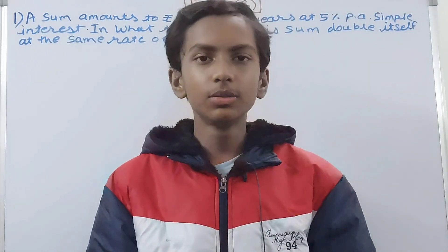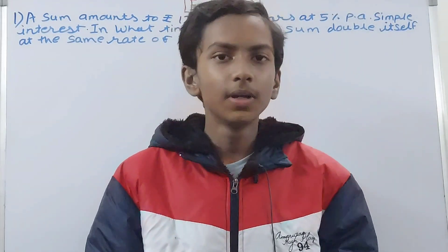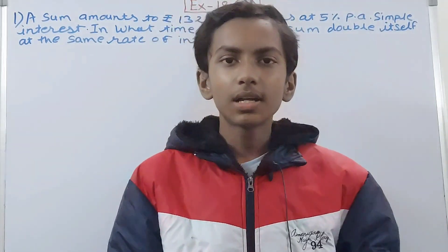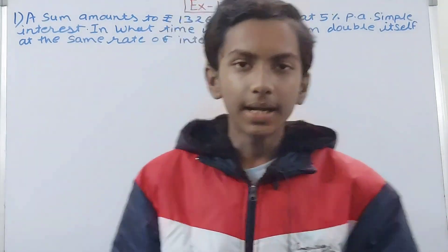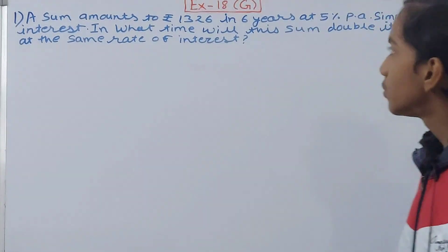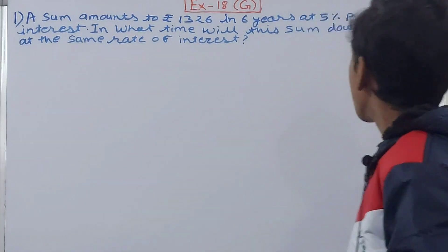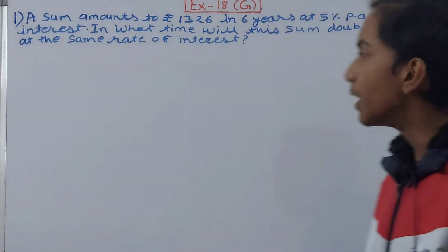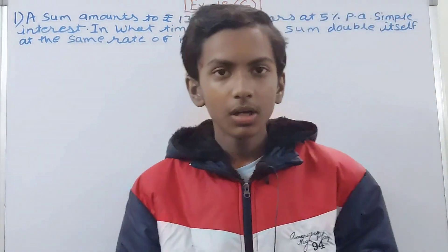Hello friends, welcome back to my YouTube channel Unlock Your Learning. In this video we are going to solve ICSE Mathematics Class 7, Chapter 18: Percentage and its Applications, Exercise 18G, Question 1. The question says: a sum amounts to rupees 1326 in six years at five percent per annum in simple interest. In what time will this sum double itself at the same rate of interest?